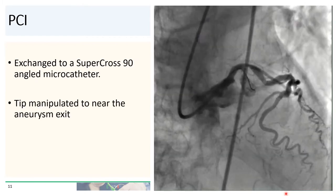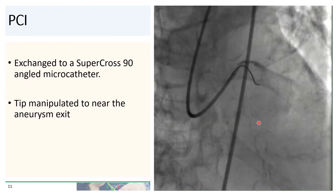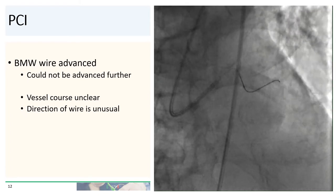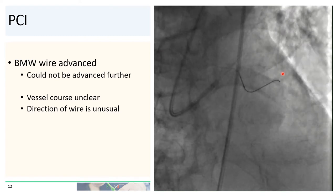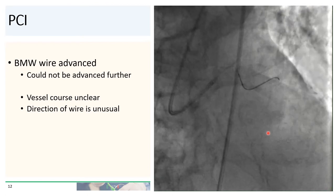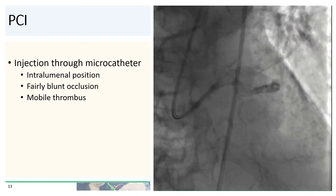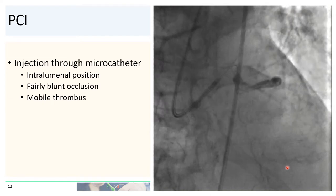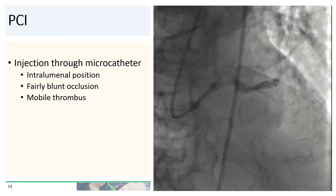We then exchanged the Supercross microcatheter for a 90-degree angled microcatheter and manipulated the tip closer to the mouth of the exit. With the tip of the microcatheter positioned near the exit of the aneurysm, we were able to pass the BMW into the LAD more distally. However, the BMW wire got stuck and could not be advanced further, and the vessel course was completely unclear — the direction of the wire was somewhat unusual, going northward. We injected contrast into the microcatheter and confirmed that the wire was indeed intraluminal. The occlusion appeared fairly blunt and clearly had some mobile thrombus within the vessel.